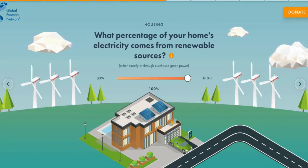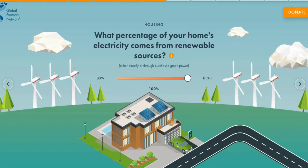The next question looks at renewable sources of electricity. While my house doesn't run on wind turbines or solar power, and I don't own an electric vehicle, we do purchase green power — buying from electricity companies that use renewable means of generating electricity. You can also do something called carbon offsetting, where the company you buy electricity from plants trees or uses other means of carbon capture to draw in the amount of carbon that your energy use releases into the atmosphere.